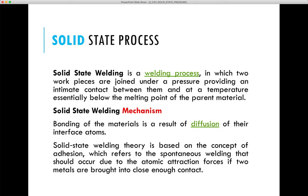In solid state welding, we do not require any melting process. The theory emphasizes that the two workpieces or materials we want to join should exist without any defects or contaminations. The metal surfaces should not have any oxides, contaminants, or surface roughness. Once these are eliminated, a solid joint can be created based on the metallic bond that forms.